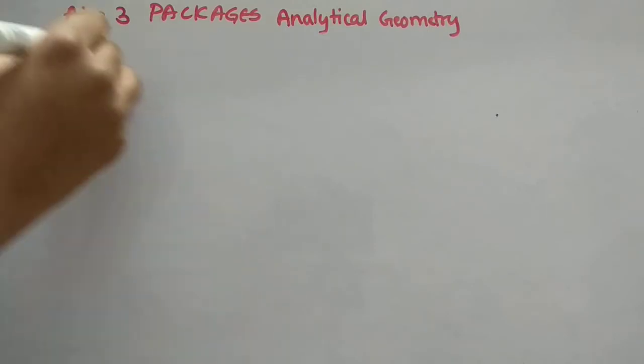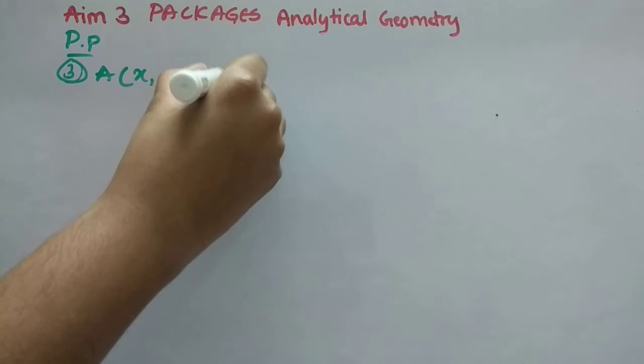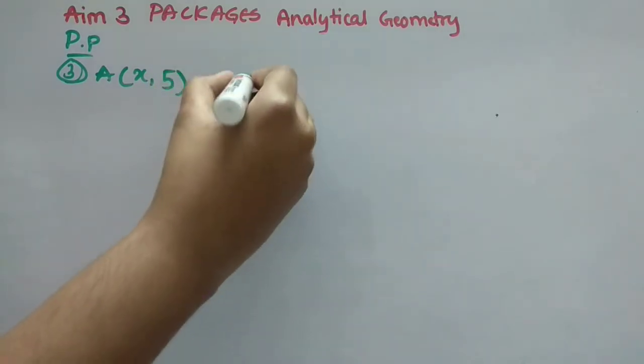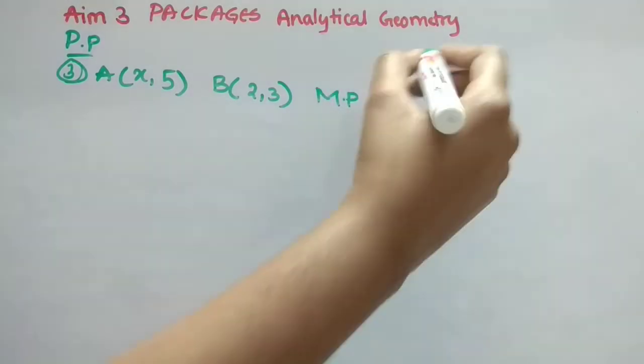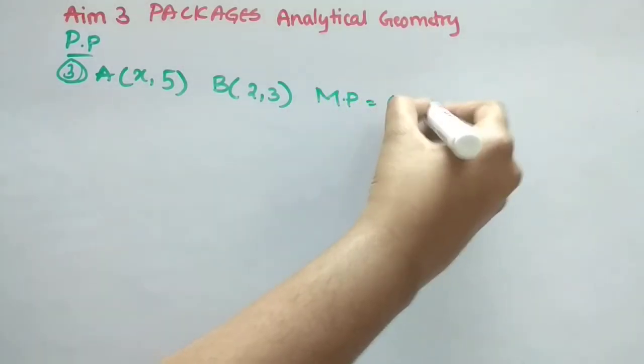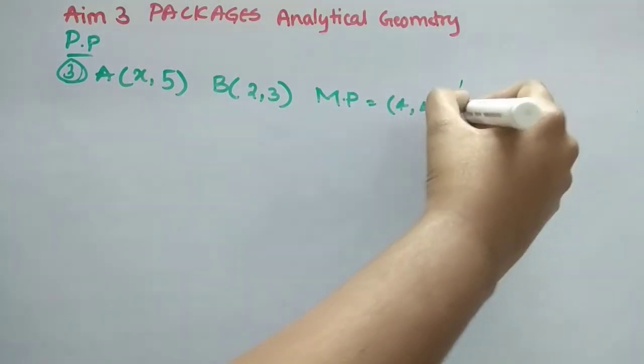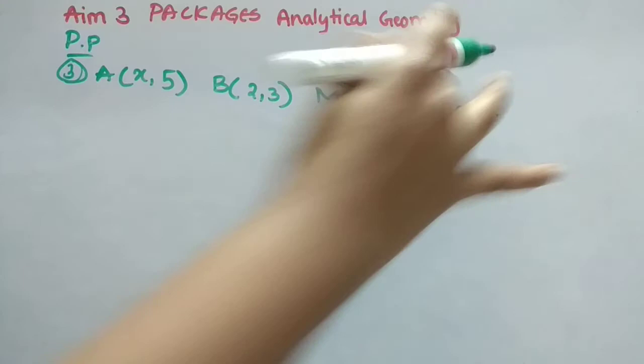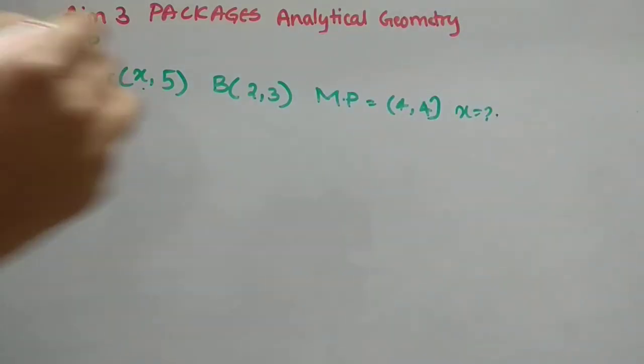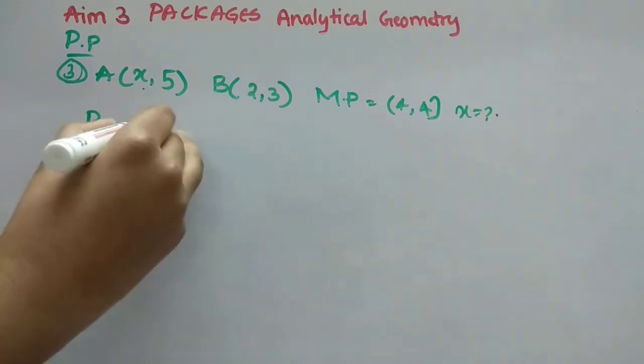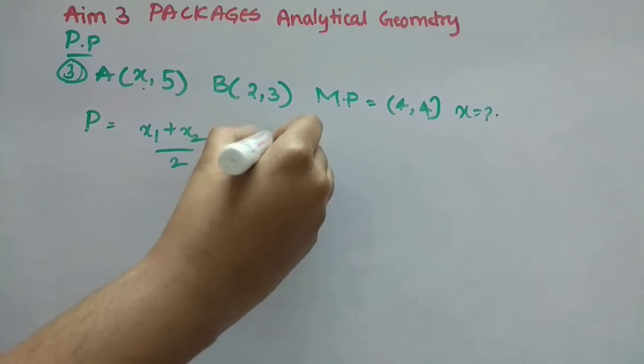Now this question, they have given us A value as (X,5) and B value as (2,3). They have given us midpoint also, that is (4,4). Then X is equal to what? We have to find that only. So here X is there, right? That one we have to find.